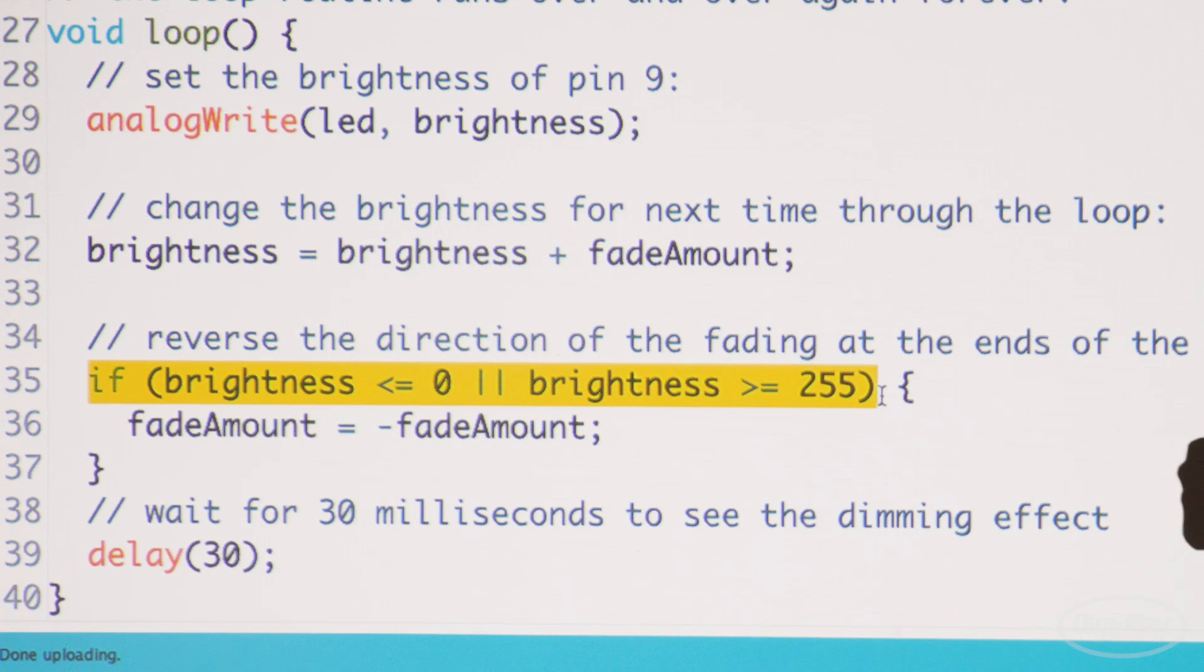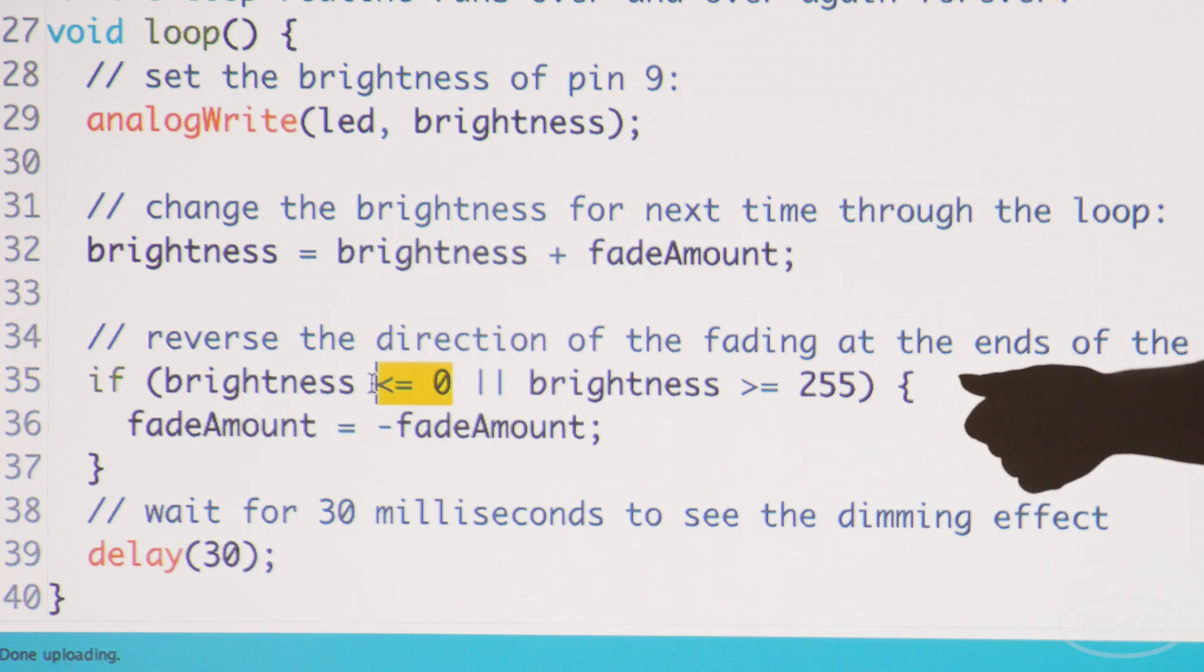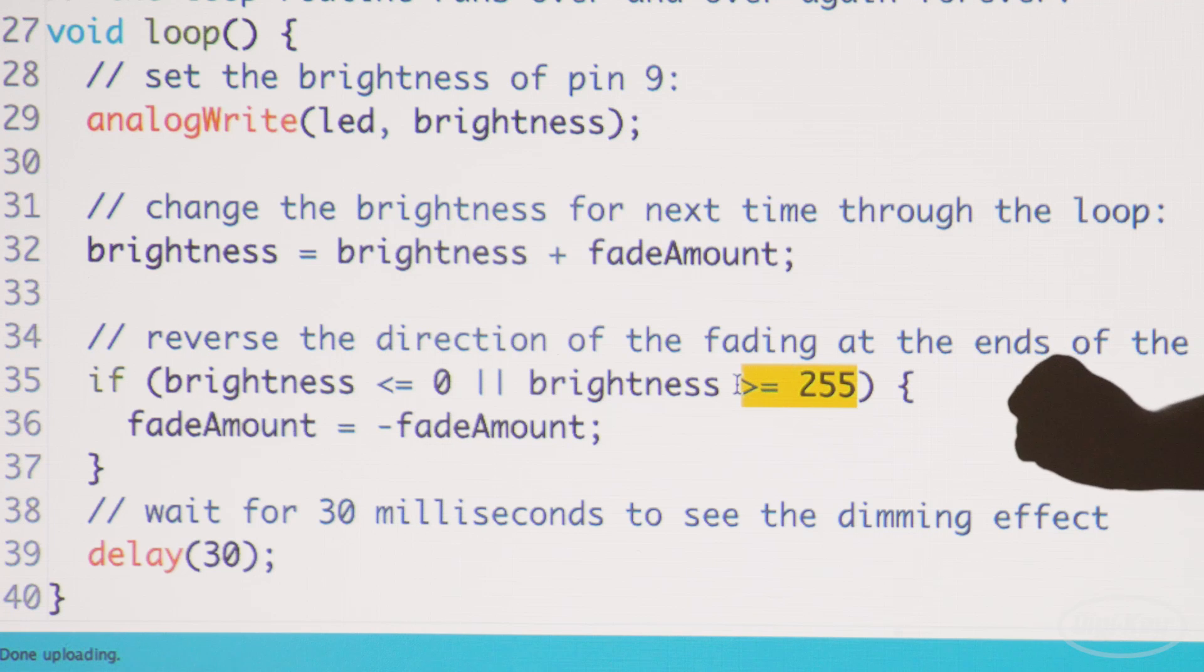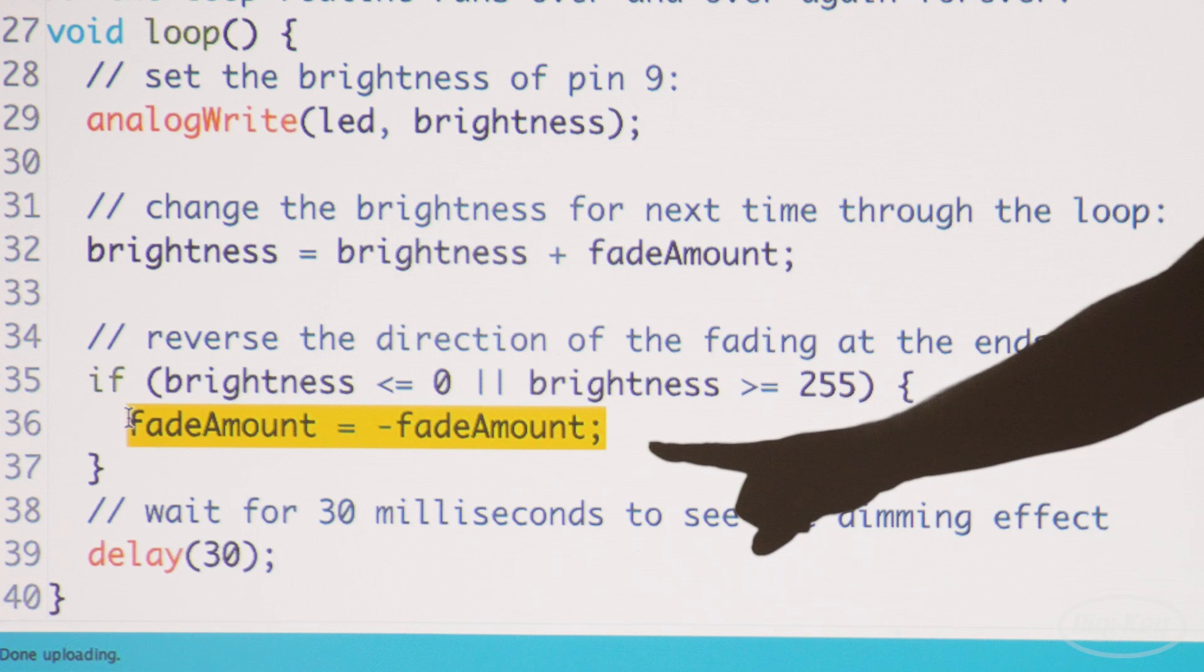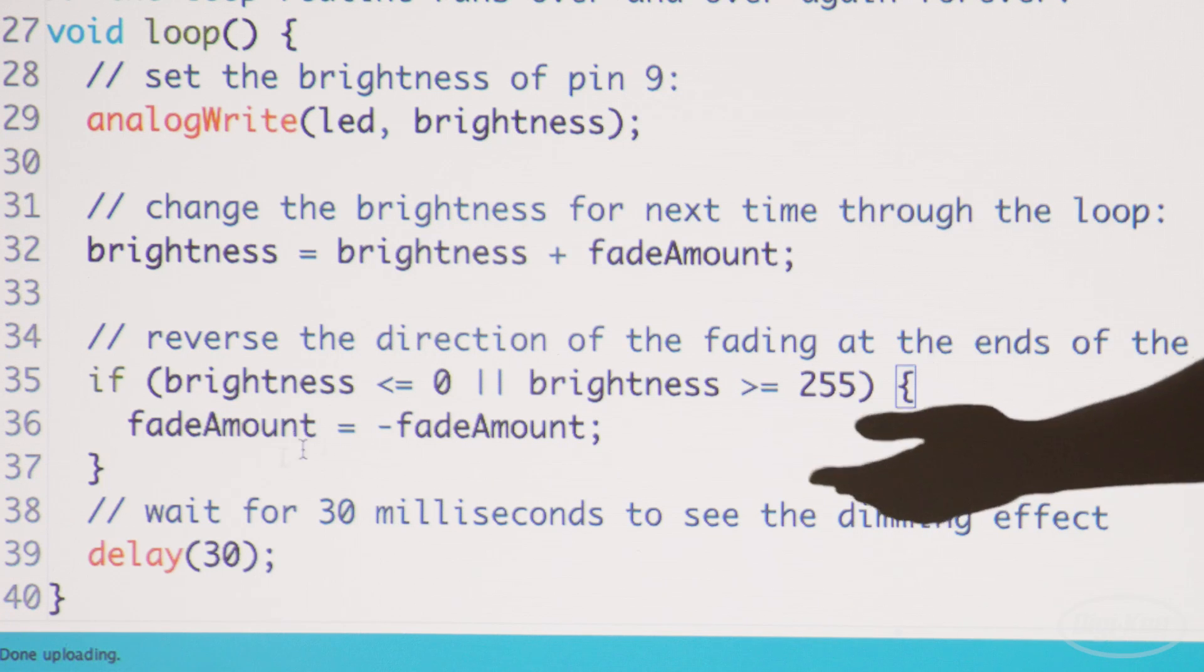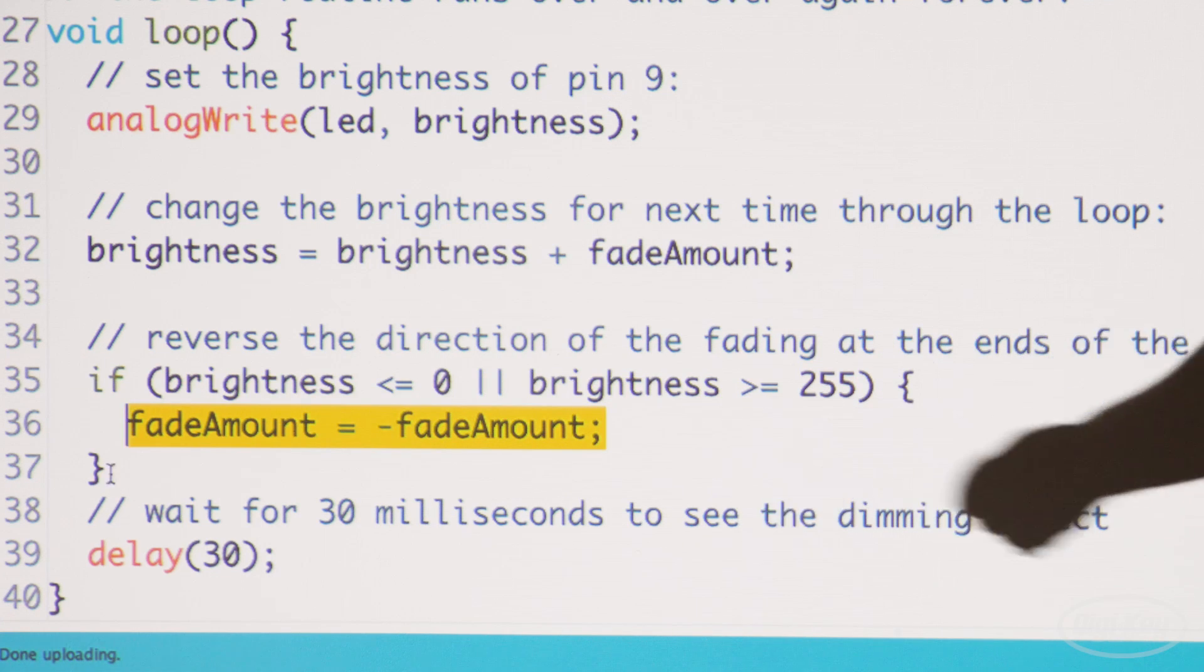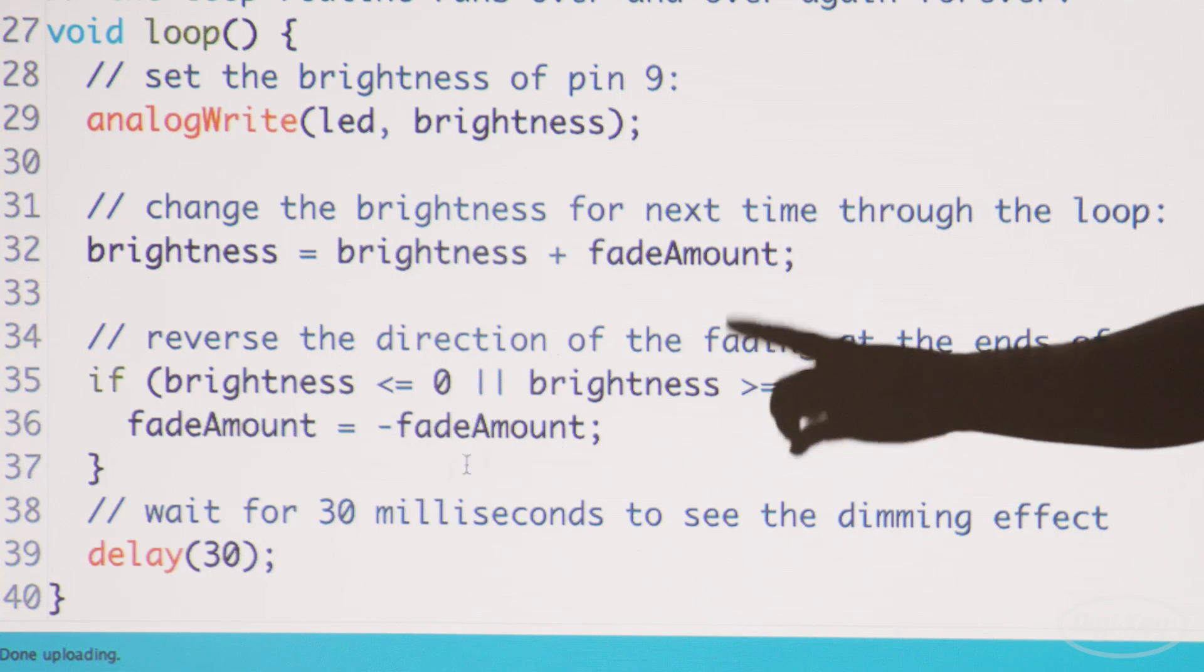Line 35 uses an if statement to check brightness using comparison operators. If brightness is less than or equal to 0, or greater than or equal to 255, if the statement is true, the code inside is executed. Otherwise, it's just skipped. So this code increases the brightness until it reaches or exceeds 255, then sets fadeAmount to negative, and decrements brightness until it reaches 0, or below 0.